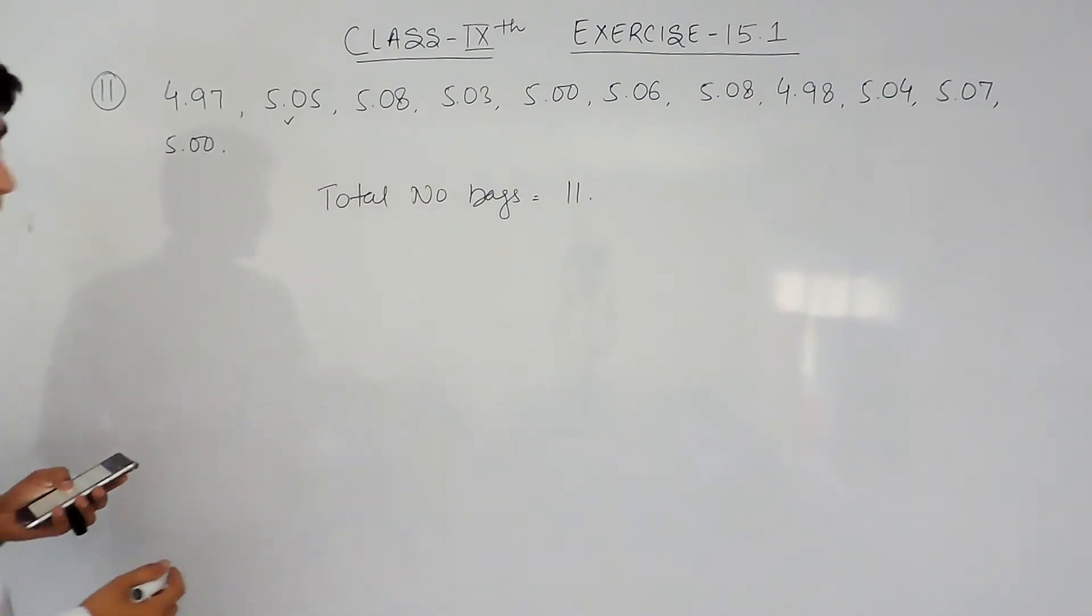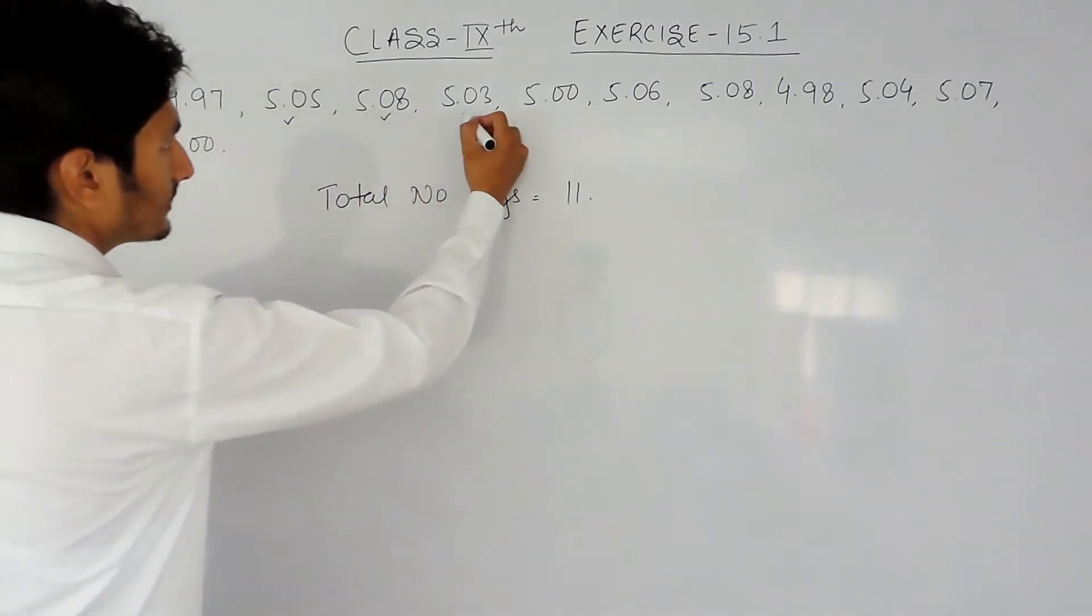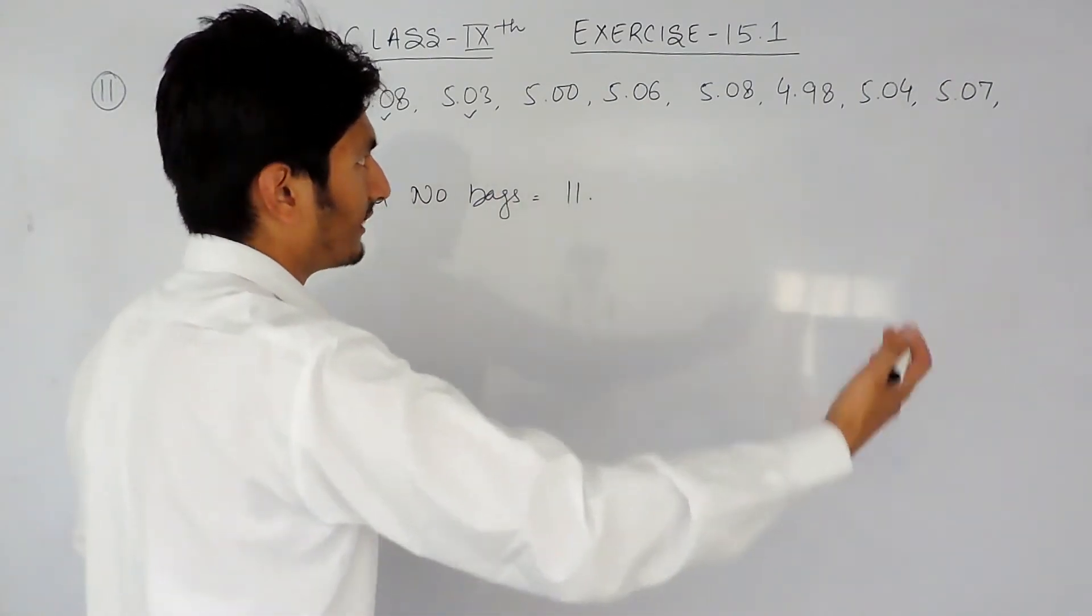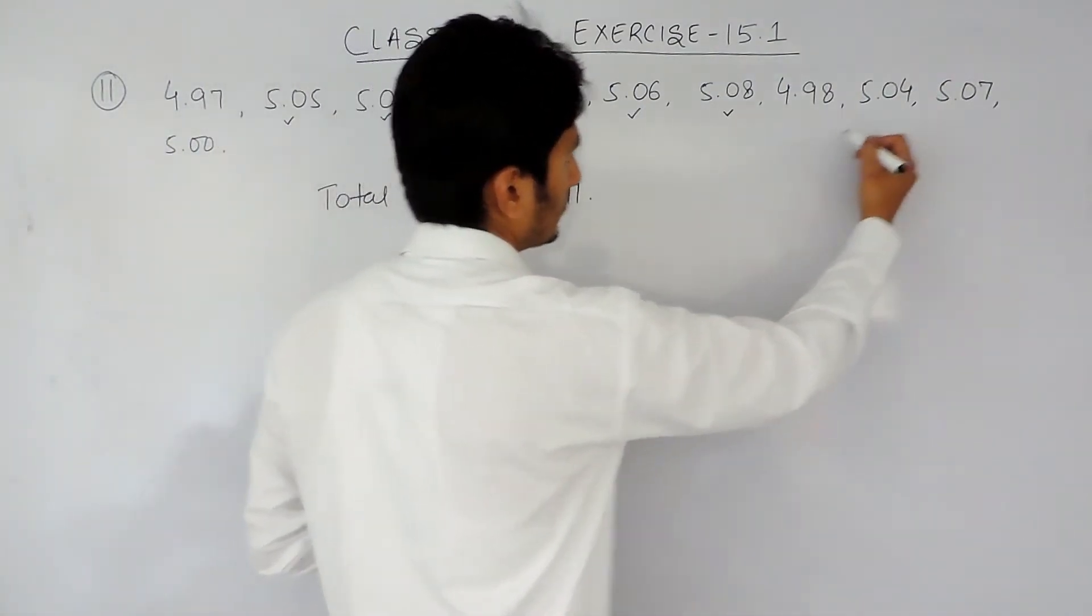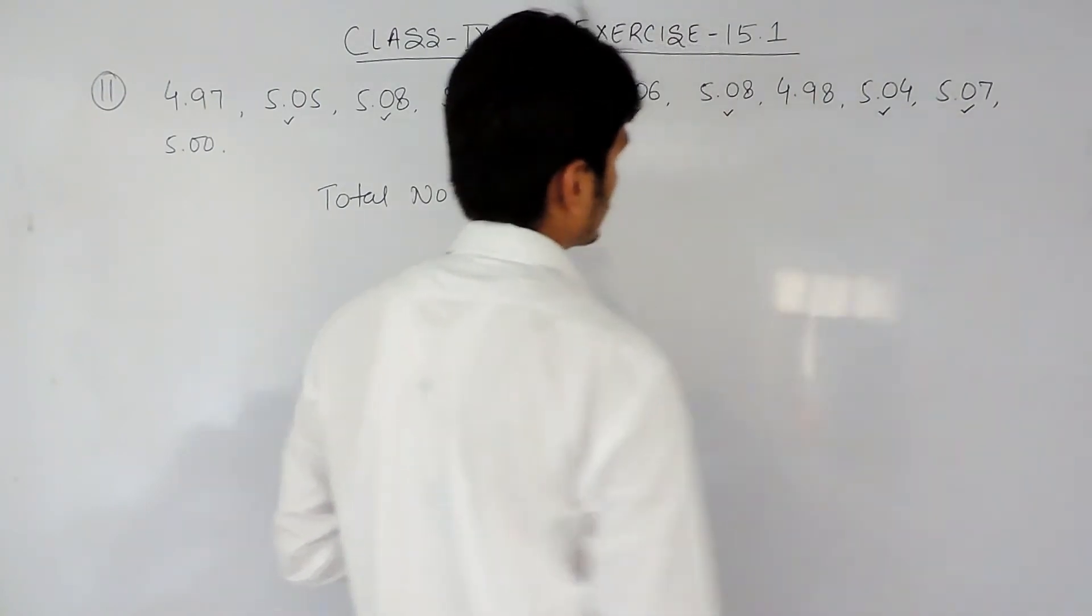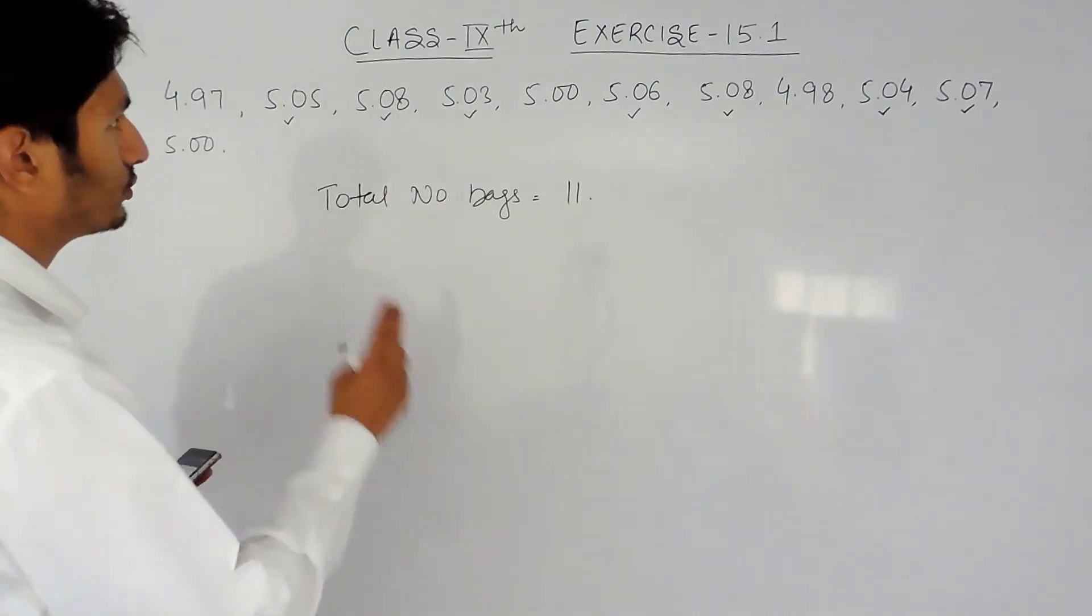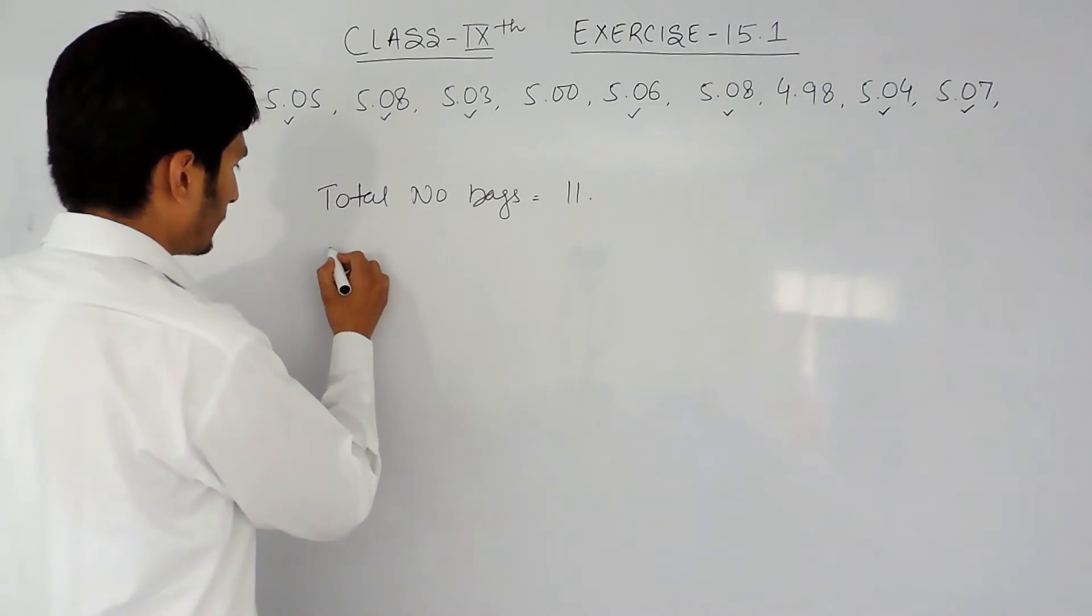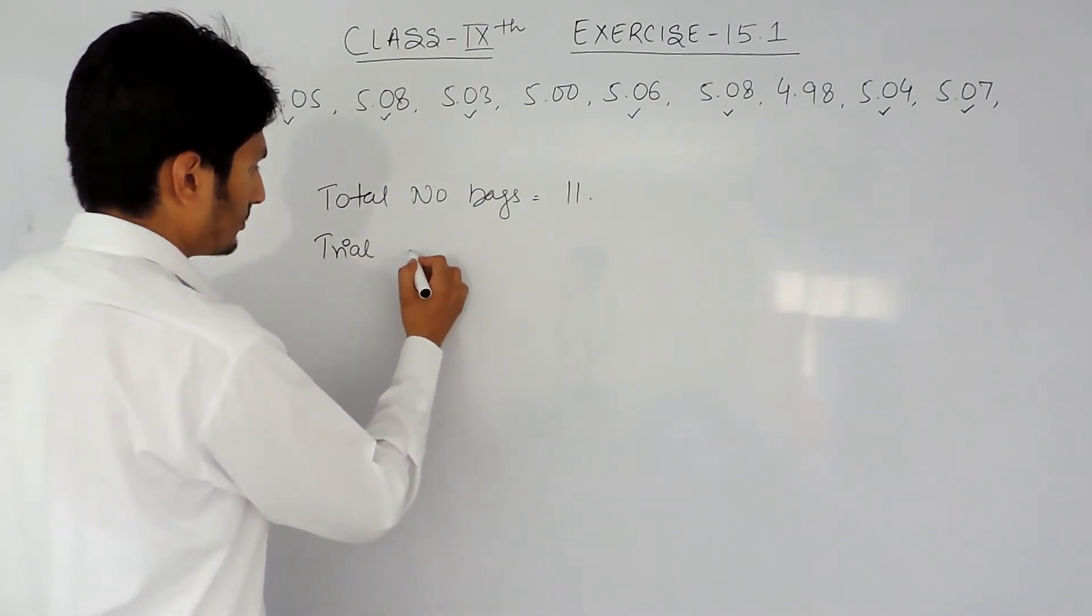Trial in which this event occurred, this is the second trial, this is third. This won't come because we have to find more than five, not equal to five. This is third, fourth, fifth, sixth and again this won't be included. So there are seven cases where the number of trials where this event has happened is seven times.